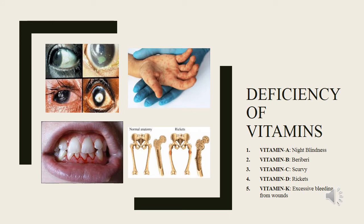Deficiency of Vitamins. Vitamin deficiency anemia is a lack of healthy red blood cells caused when you have a lower than normal amount of certain vitamins. Vitamins linked to vitamin deficiency anemia include vitamin B12 and vitamin C. There are different vitamins that cause different diseases. Vitamin A causes night blindness or loss of vision. Its symptoms are poor vision, loss of vision in darkness or at night, and sometimes complete loss of vision.